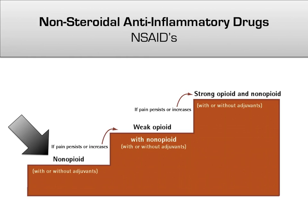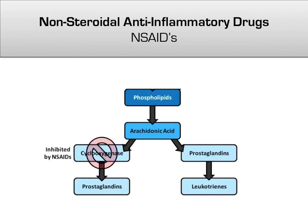The first rung on the pain ladder are the NSAIDs, or non-steroidal anti-inflammatory drugs, many of which are household names — aspirin, ibuprofen, Tylenol, Advil, Motrin, etc. NSAIDs work by inhibiting the cyclooxygenase, or COX enzyme, preventing the production of prostaglandins, which are molecules implicated in pain sensation.